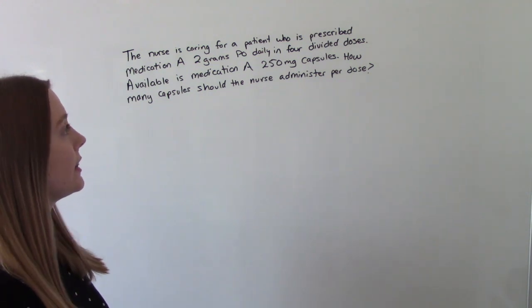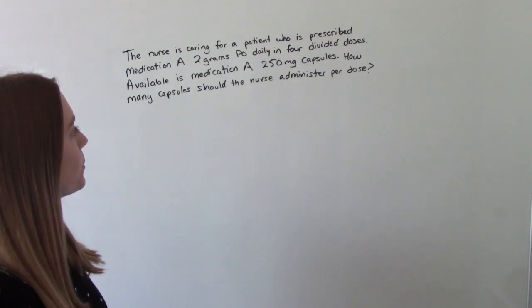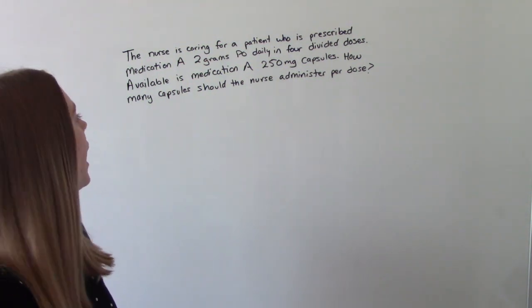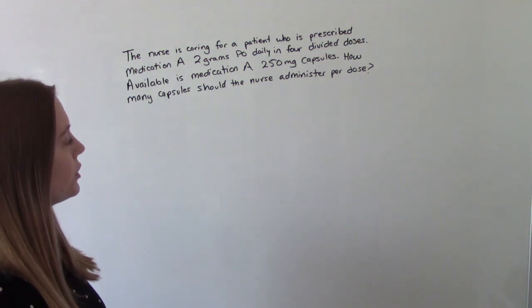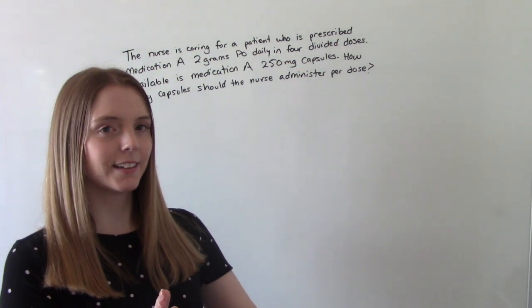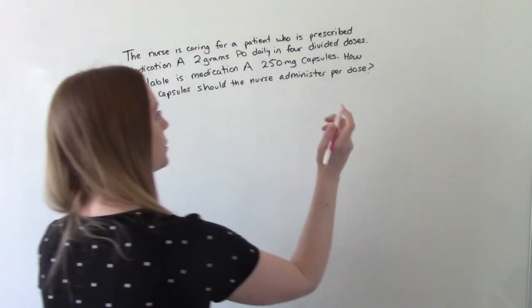Let's do another one. The nurse is caring for a patient who is prescribed medication A, 2 grams PO daily in 4 divided doses. Available is medication A, 250 milligram capsules. How many capsules should the nurse administer per dose? So pause it. Perfect. Now we're back. Let's do it. So we're looking for capsules per dose.